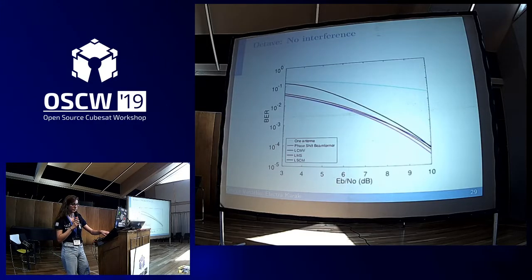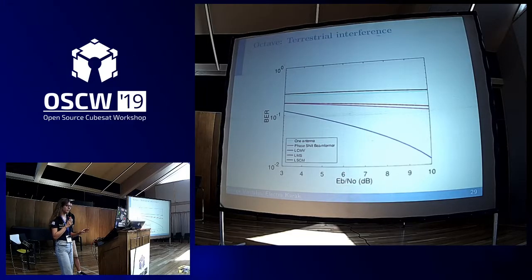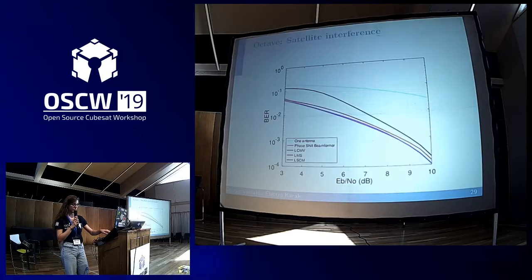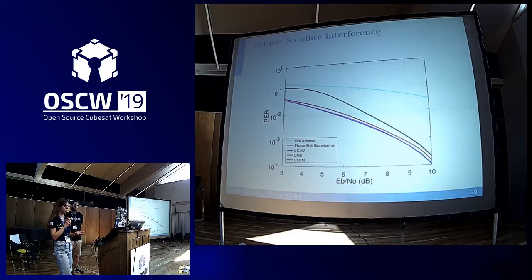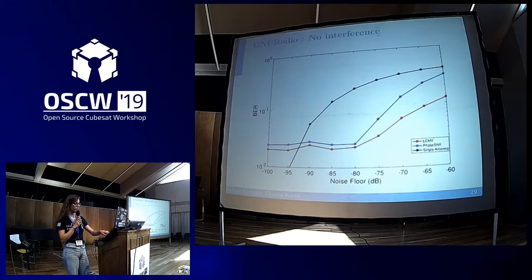Here are the results from Octave. When we assumed another signal at low elevation, around 20 degrees, the LCMV performs better than any other algorithm. When the interferer is at higher altitude, such as from another satellite, the performance degradation is less severe and most algorithms show similar performance.